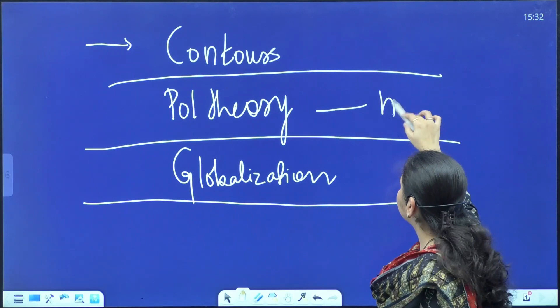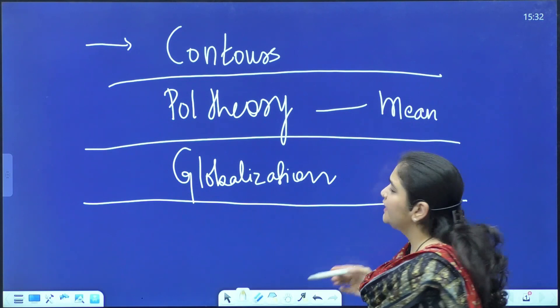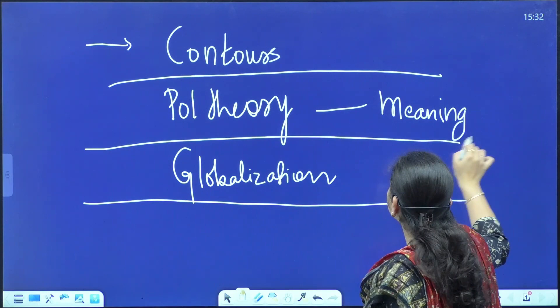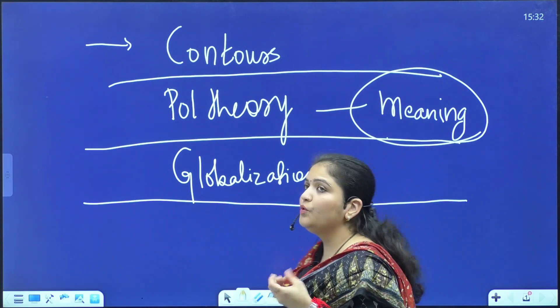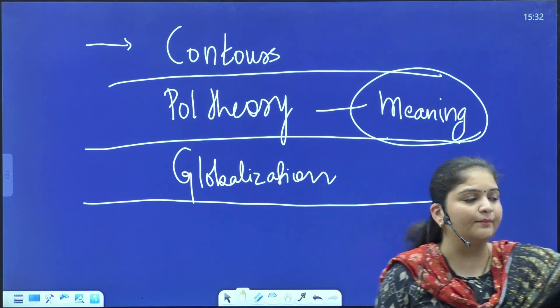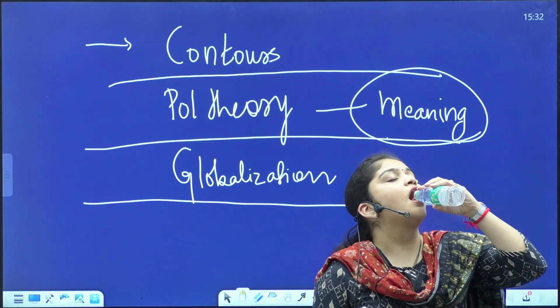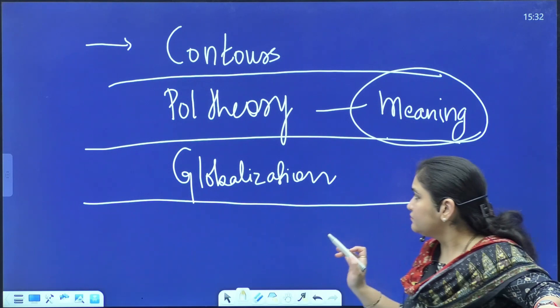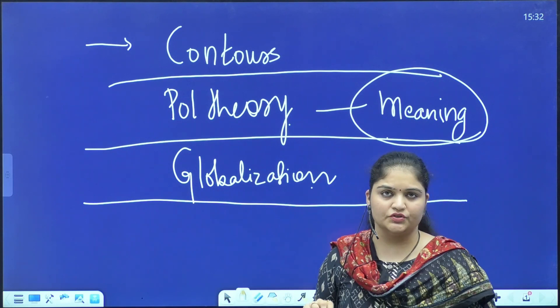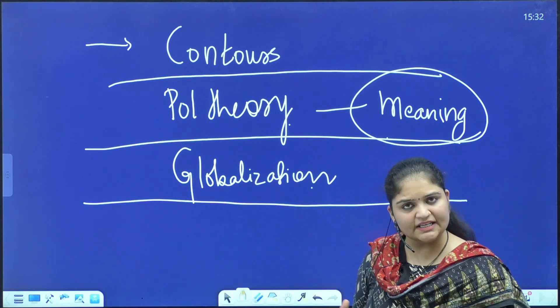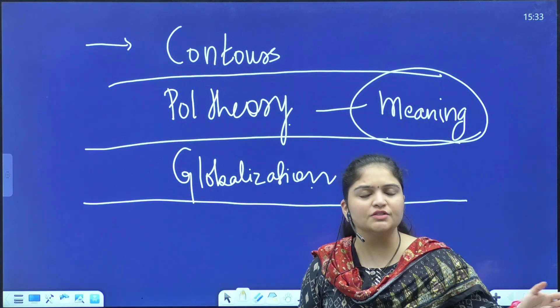We know that first, the meaning of political theory — it is a systematic explanation of a phenomenon, systematic knowledge of a political phenomenon. In this question, we will be talking of the meaning of the concept of political theory, how it brings about clarification of various concepts, how it brings about hypothesis building, and how it seeks to provide us a path for the future. Now, why have they asked this in the context of the era of globalization?